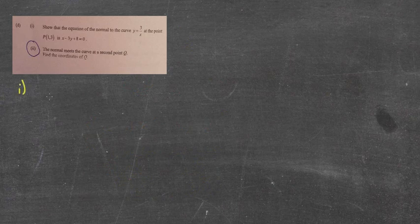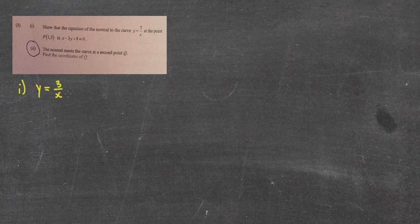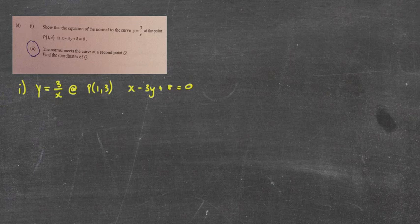This is a fairly tough question. I'll just do the first part to make sure we're on the right track. Show the equation of the normal — not the tangent, the normal — to y equals 3 over x at the point (1, 3), and we want to make x minus 3y plus 8 equals 0. So at least they tell us what it needs to be, so if we do it wrong we can go back and see where we went wrong.